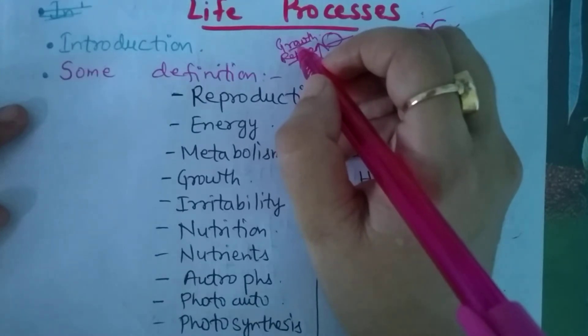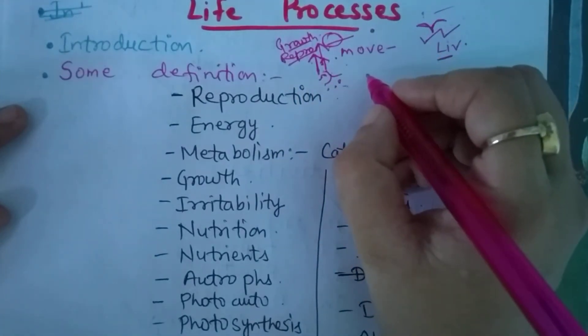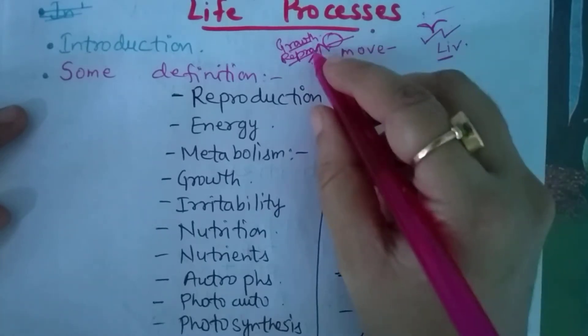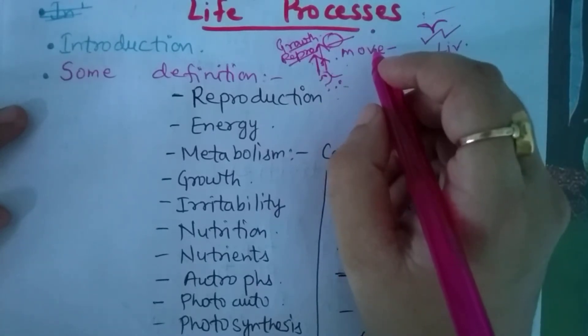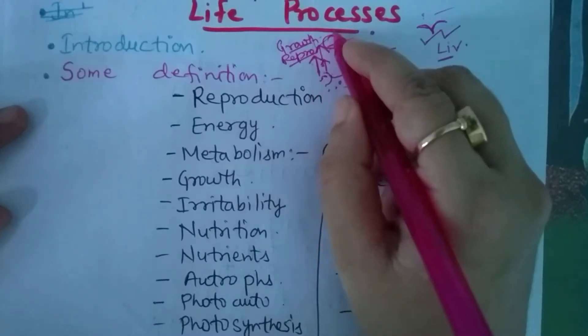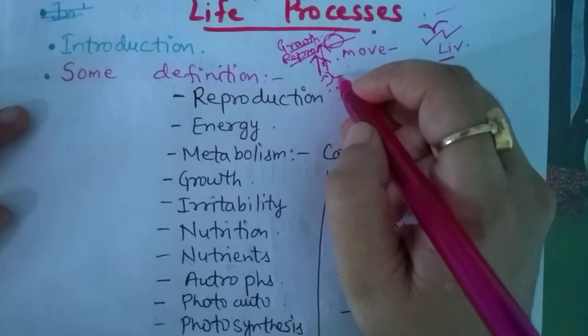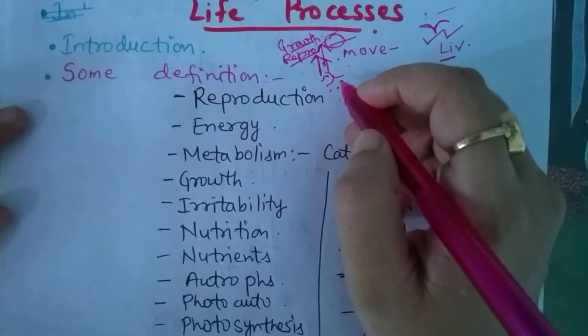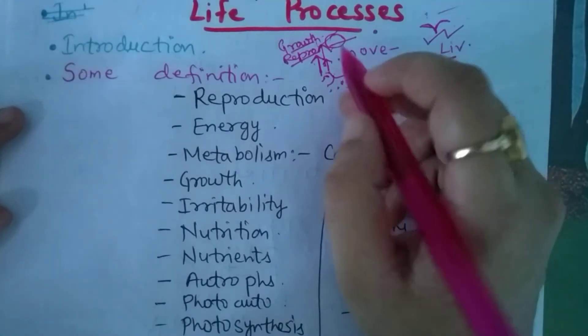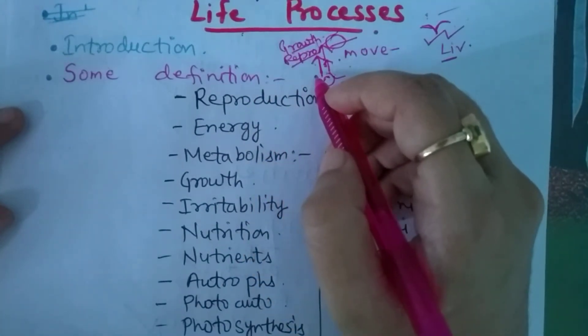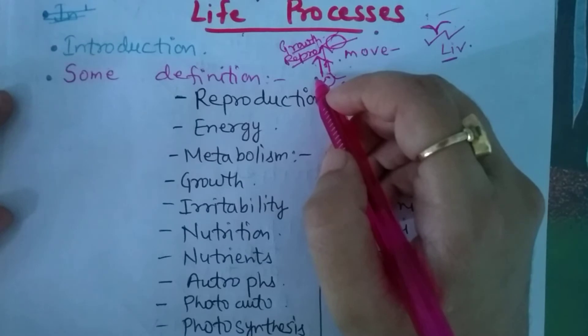We see growth in plants, we see reproduction. From all these things, we conclude that plants are also living organisms. But in things like tables and fans, these things cannot happen. They cannot reproduce, cannot grow, and that's why they are non-living organisms or non-living beings. This is the term we use in the introduction.